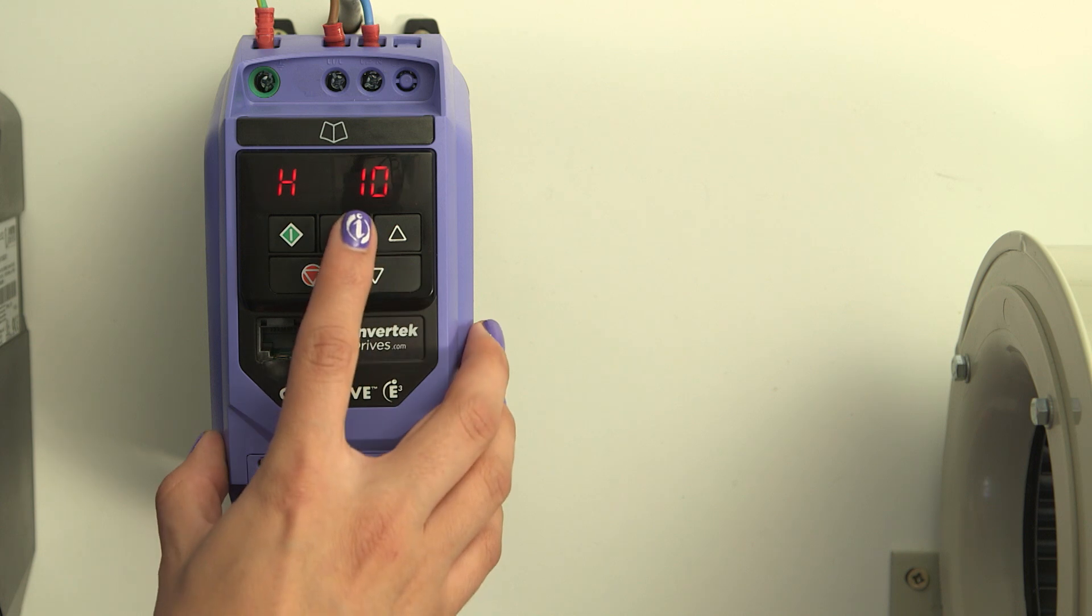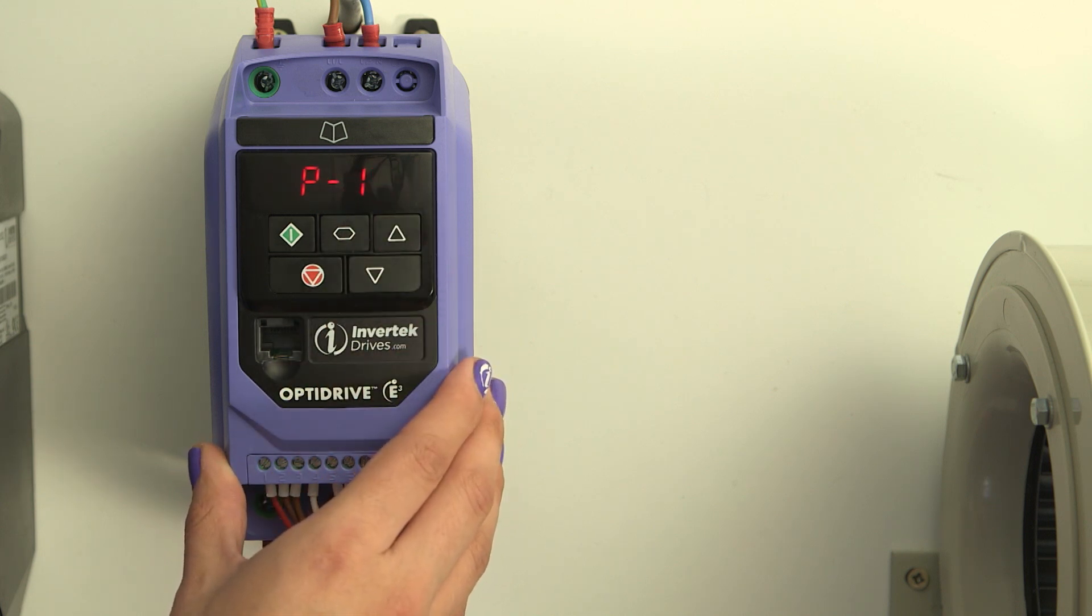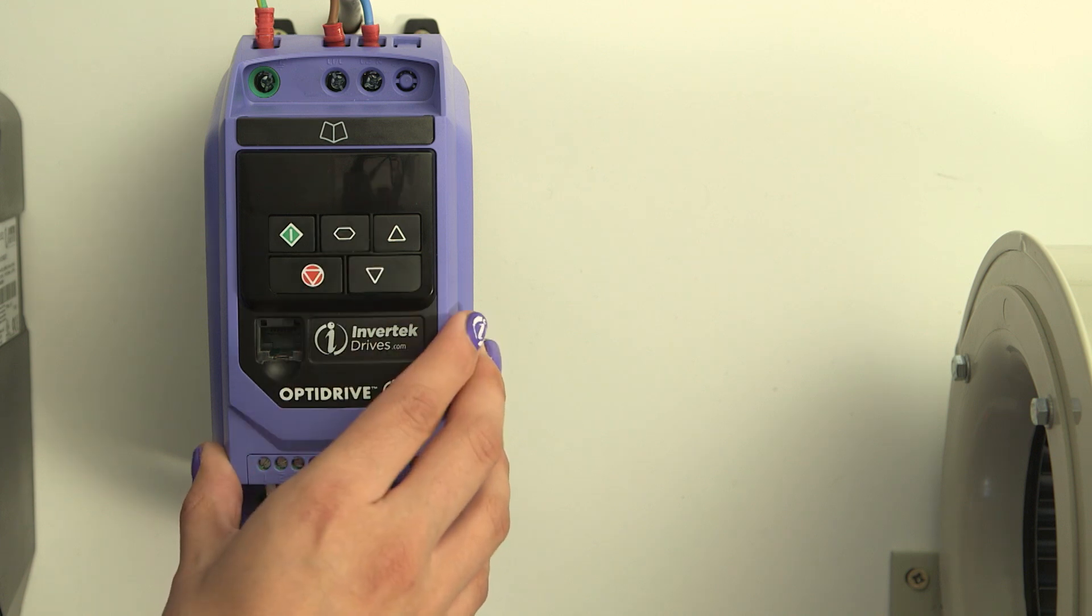Now, go to parameter 10, which is the motor nominal speed, Nn. Again, from the datasheet, this should be 3000.